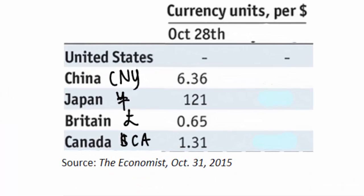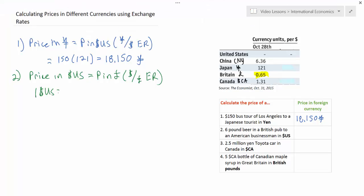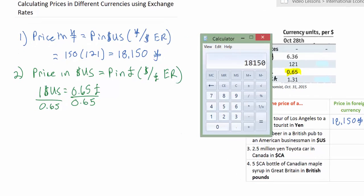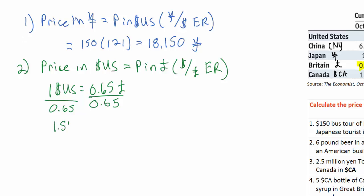Here's where things get a little complicated. The table does not tell us the dollar-per-pound exchange rate — the table tells us the pound-per-dollar exchange rate. We know that 1 US dollar equals 0.65 British pounds. What we want to know is how many dollars each pound equals. To isolate the pound, we divide both sides by 0.65: 1 divided by 0.65 gives us a pound exchange rate of 1.54 dollars.